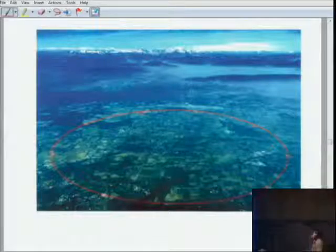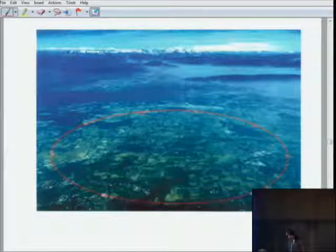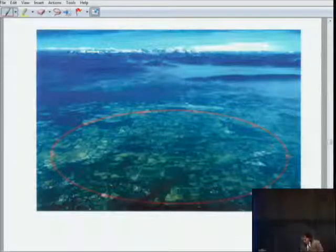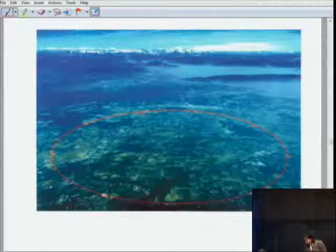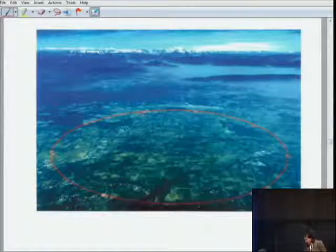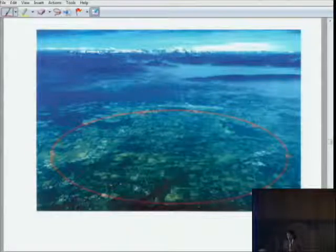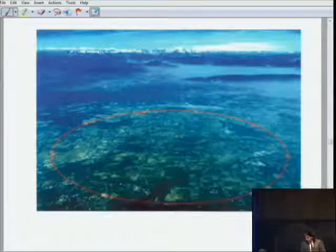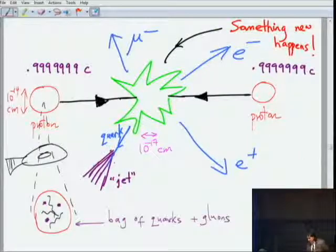Around a thousand times the rest mass, 10,000 times the rest mass of the protons. They're then made to collide with each other at a couple of places around the ring. And those collisions probe physics at these distances, around 10 to the minus 17 centimeters.